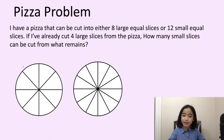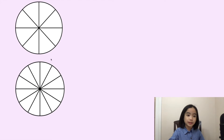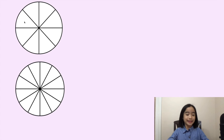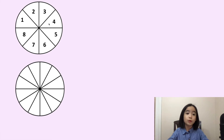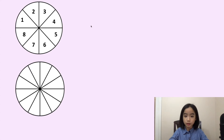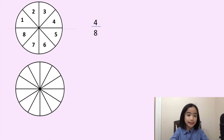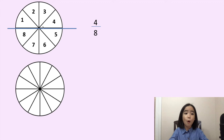Now, let's figure this out together. So, here is a pizza cut into eight large equal slices. Here, I have marked it by numbers. We know that four slices are half of eight slices. So, the fraction is four-eighths. Here, I have put a line in the middle to show that four slices are half of the pizza.